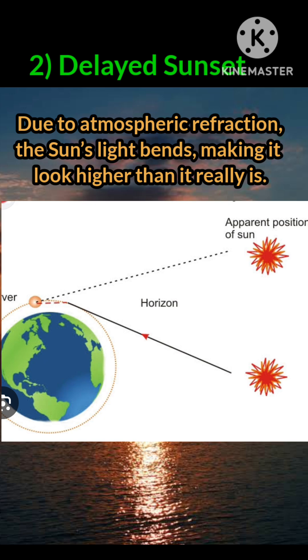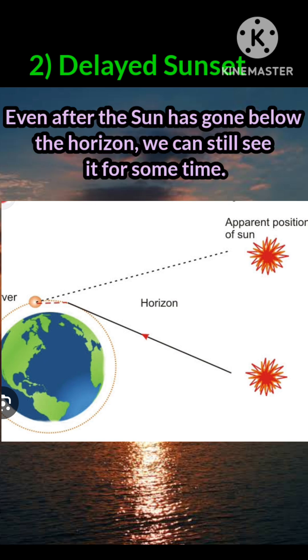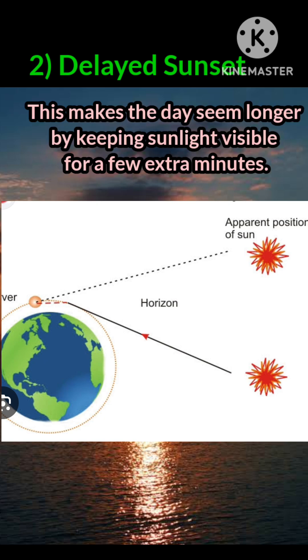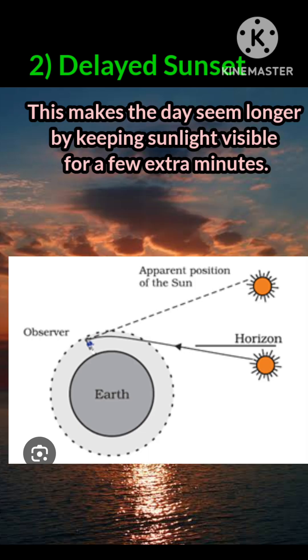Even after the sun has gone below the horizon, we can still see it for some time. This makes the day seem longer by keeping sunlight visible for a few extra minutes.